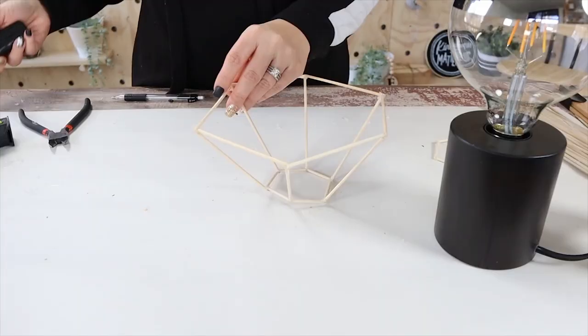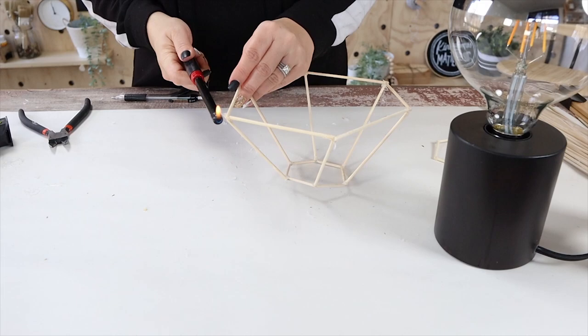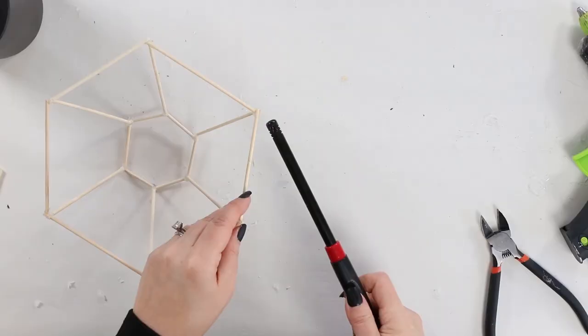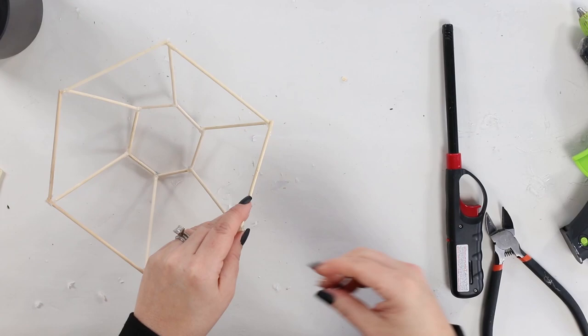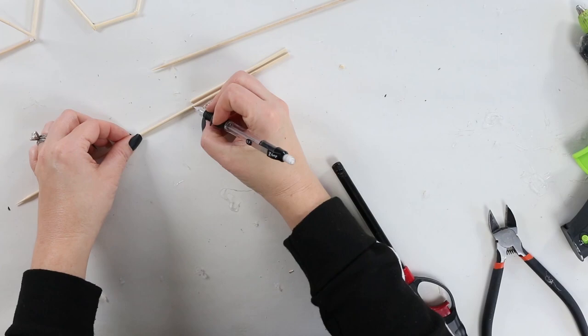I'm going to use a lighter just to kind of make the glue disappear a little bit and have it lay flat. I'm going to cut six more brace pieces that I'm going to use on the top half.